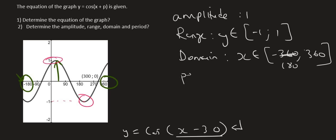Then the last one is the period. Now the period is how long does the graph take to repeat, which is 360 for a normal cos graph. If you move a cos graph over to the right, you're not going to affect the period. It's still going to take 360 degrees to repeat.